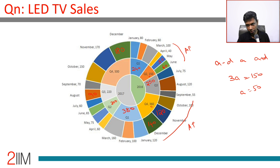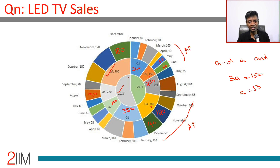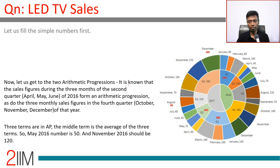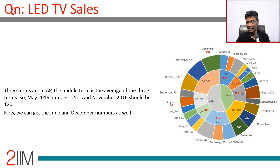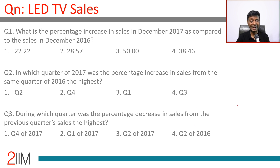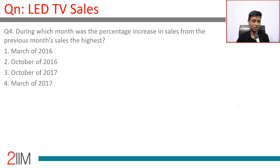So we have monthly numbers for all four quarters of both years. All monthly numbers are available, all quarterly numbers are available, and all annual numbers are available if needed. Methodically, we filled the more obvious numbers first, then attacked the AP part, and now we move on to the questions with the entire grid in hand.